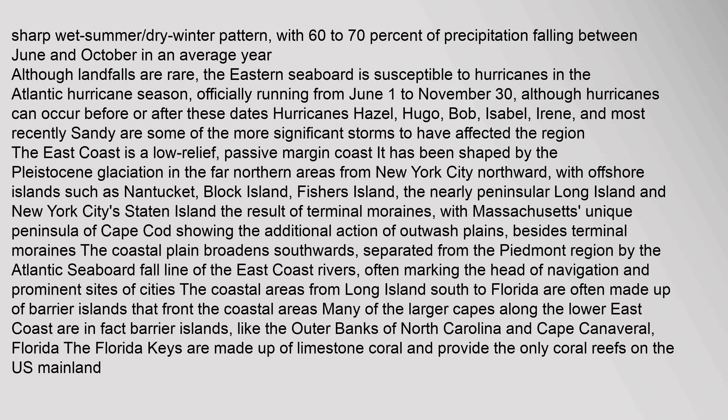The coastal plain broadens southwards, separated from the Piedmont region by the Atlantic seaboard fall line of the east coast rivers, often marking the head of navigation and prominent sites of cities. The coastal areas from Long Island south to Florida are often made up of barrier islands that front the coastal areas. Many of the larger capes along the lower east coast are in fact barrier islands, like the Outer Banks of North Carolina and Cape Canaveral, Florida. The Florida Keys are made up of limestone coral and provide the only coral reefs on the U.S. mainland.